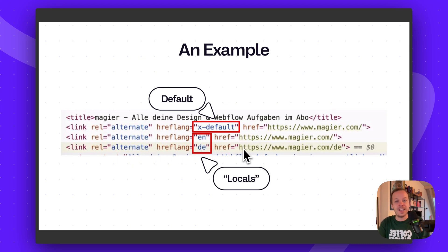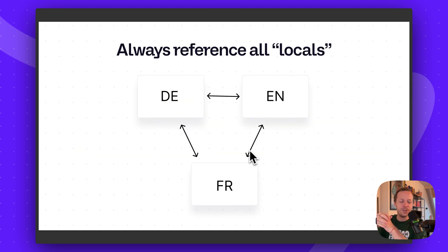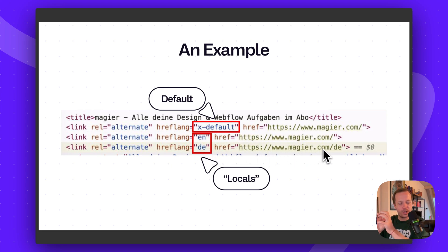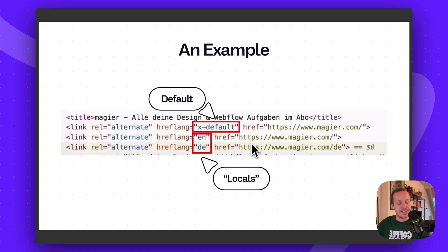Last but not least, the German version: everyone with German language settings, please show magia.com/de. It's important to understand that whenever you use hreflang tags you need to reference all locales. As we can see on the main page, we are referencing ourselves, the default state, and the identical version of the page on the German part of the website. Getting this right is super important, because otherwise all of these hreflang tags won't work and Google and search engines won't know which is the right version.